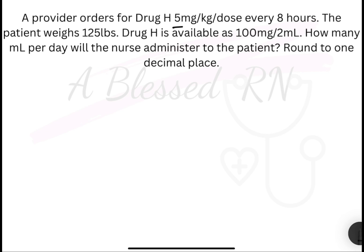A provider orders drug H, 5 mg per kg per dose every 8 hours. The patient weighs 125 pounds. Drug H is available as 100 mg per 2 ml. How many ml per day will the nurse administer to the patient? Round to one decimal place.